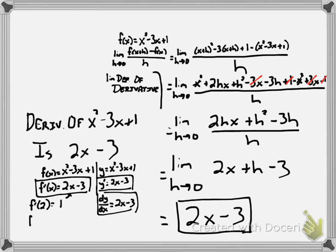If I wanted to know the derivative at 0, I would get -3, because 2 times 0 is 0, and 0 minus 3 is -3. If I wanted the value of the derivative at -1, I would get -5, because 2 times -1 is -2, and -2 minus 3 is -5.